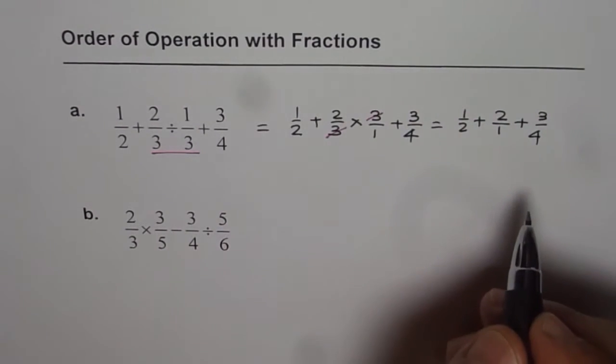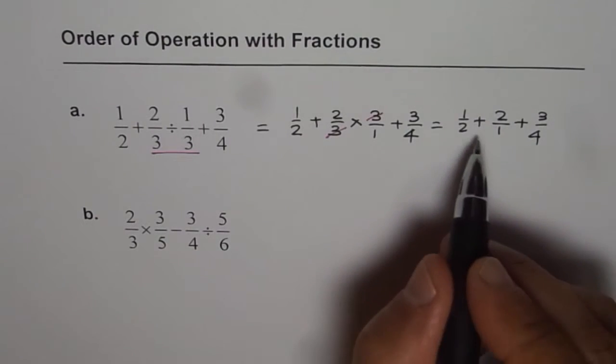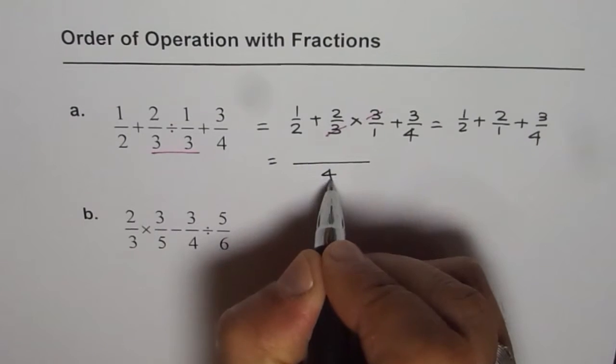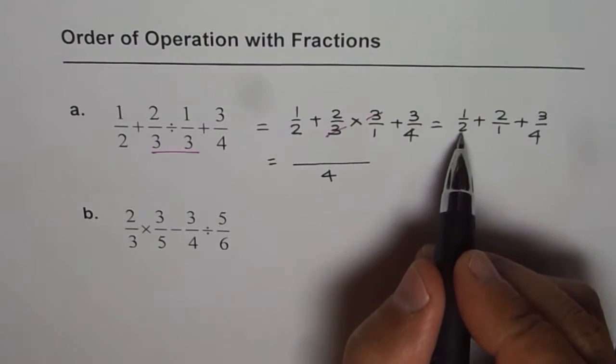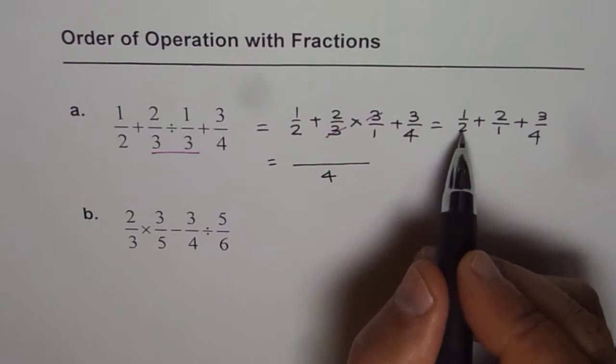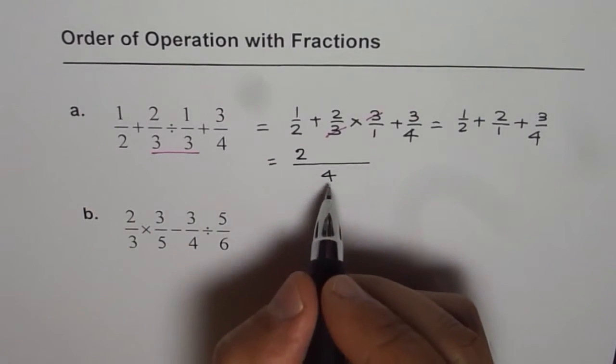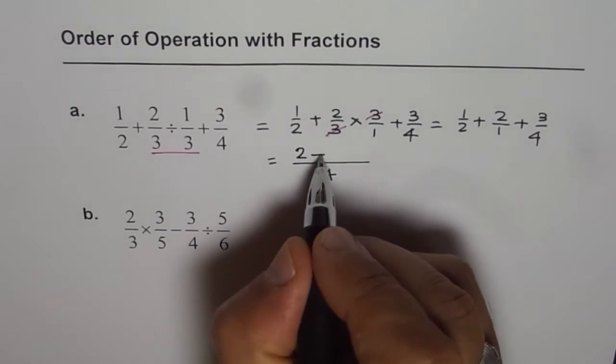So we have half plus two or you can write two over one plus three over four. Now to add these fractions, we should have common denominator. Here the common denominator is four. To make half as four, we need to multiply it by two in both numerator and denominator. So numerator becomes two, denominator is four.